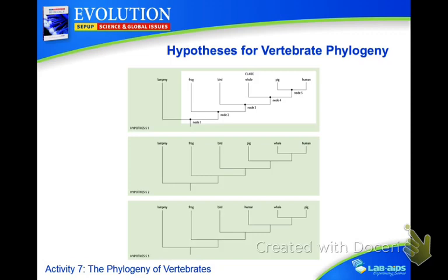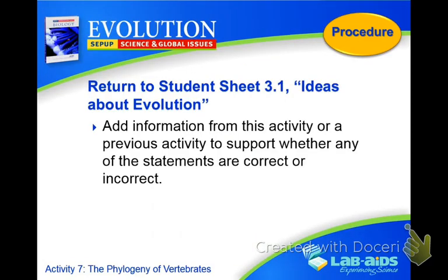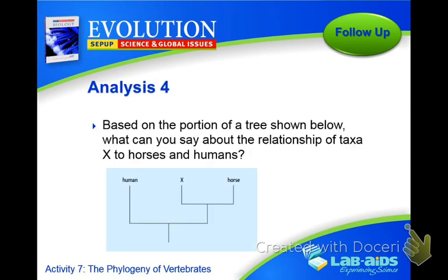Question number four: based on the portion of the tree shown, what can you say about the relationship of taxa X to horses and humans? How does X relate to horses, and how does it relate to humans? What is it missing or what does it have in relation to horses, and what does it have or is missing in relation to humans? Those are questions one, three, and four. Once you get done, turn them up to the front.